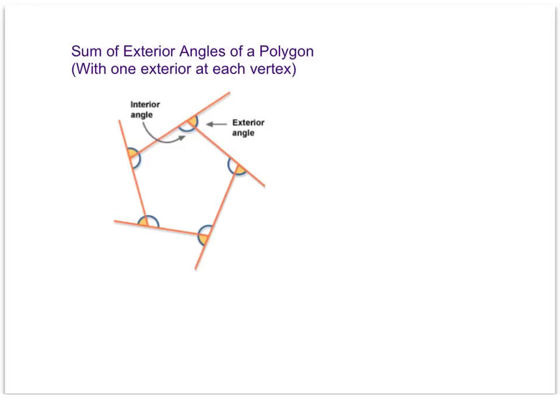In this video we're going to be talking about the exterior angles in a polygon. In addition to having interior angles, every polygon has a set of exterior angles at each vertex that are formed by extending a side. For a five-sided figure we would have five interior angles and five exterior angles.